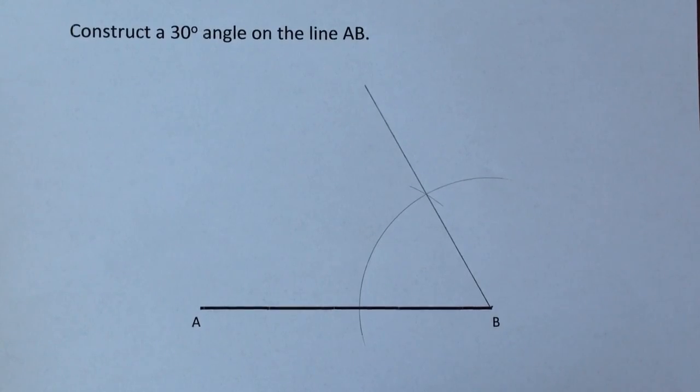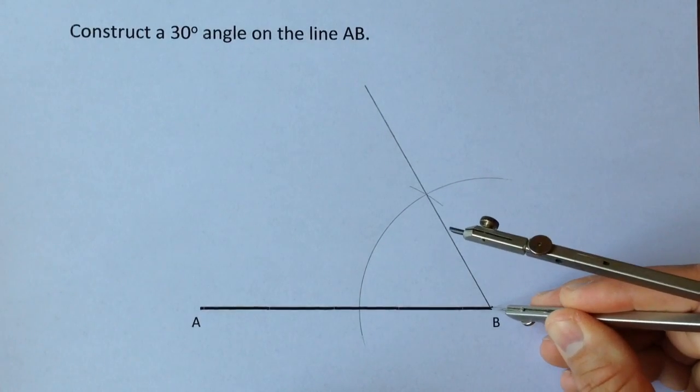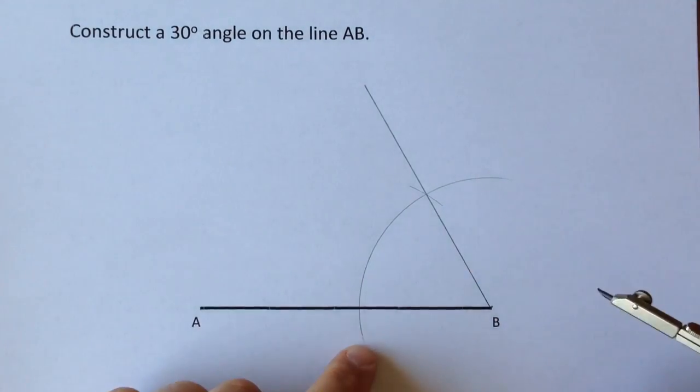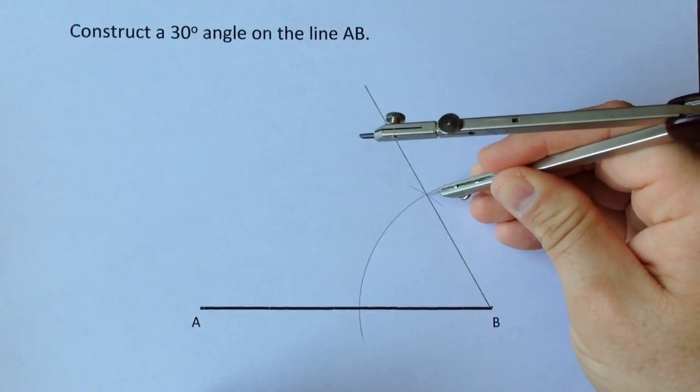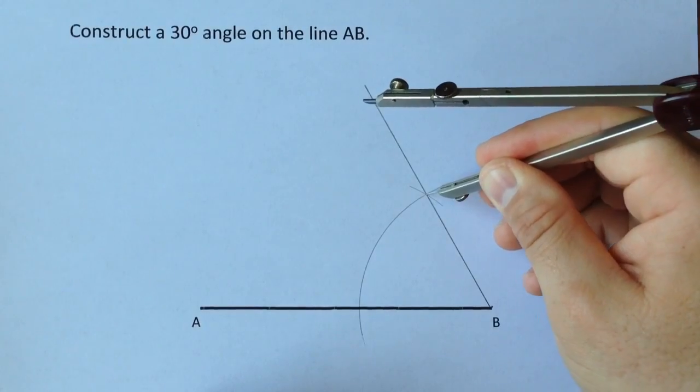The ordinary process of bisecting an angle would be compass on there, draw an arc, but you've already got that arc so now just move your compass to where those two arcs meet.